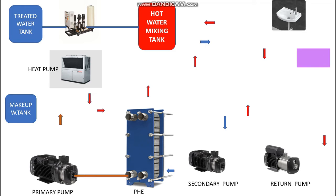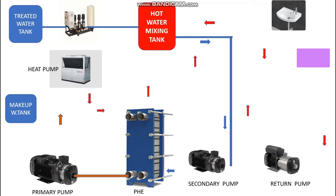This can be done with the help of the PHE — the plate heat exchanger. The secondary pump takes the cold water from the hot water mixing tank. This cold water comes out from the tank and goes to the secondary pump. The secondary pump pulls the cold water from the hot water mixing tank, and from the discharge of the secondary pump it feeds to the inlet of the PHE on the cold side.